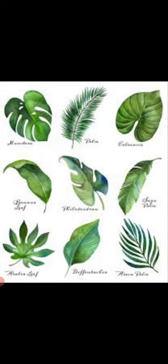The leaves make food for plants with the help of sunlight, air, and water. The leaves act like a kitchen for the plant and are the primary source of food.